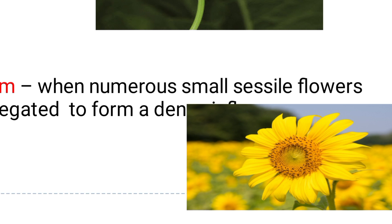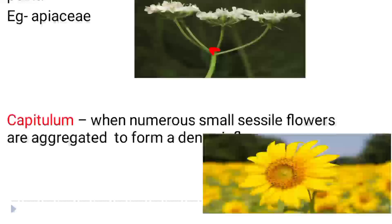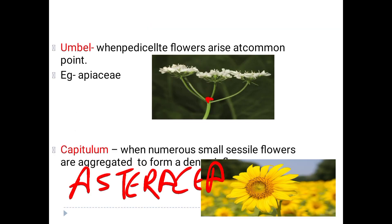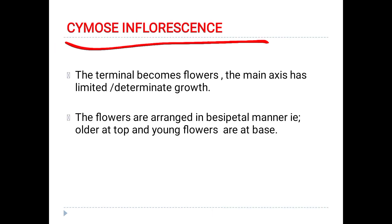The family of sunflower is Asteraceae. Now we have studied all the racemose types, and we are going to study cymose inflorescence.